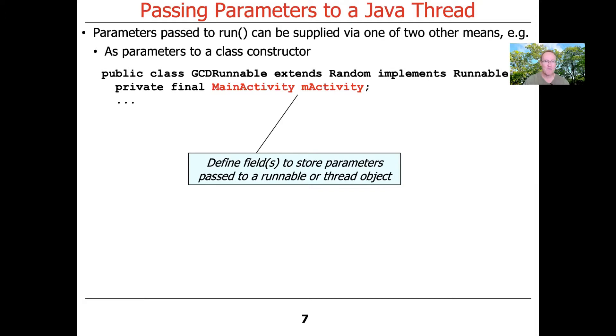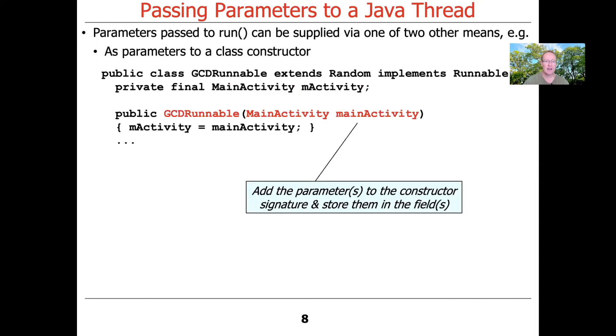And so what we're going to do here is define some fields that can be stored parameters that we need to pass to a running thread. And then the easy way to do this, of course, as you can see here, as you probably already guessed, is we simply have a constructor for GCD runnable that takes one or more parameters. In this case, it takes one parameter because we have one field we want to pass to the thread.